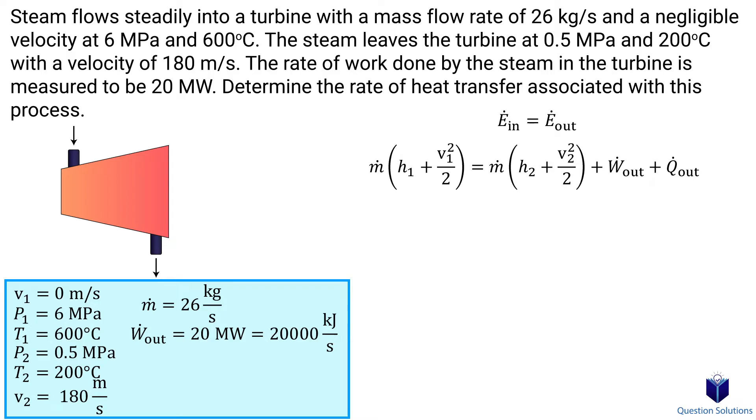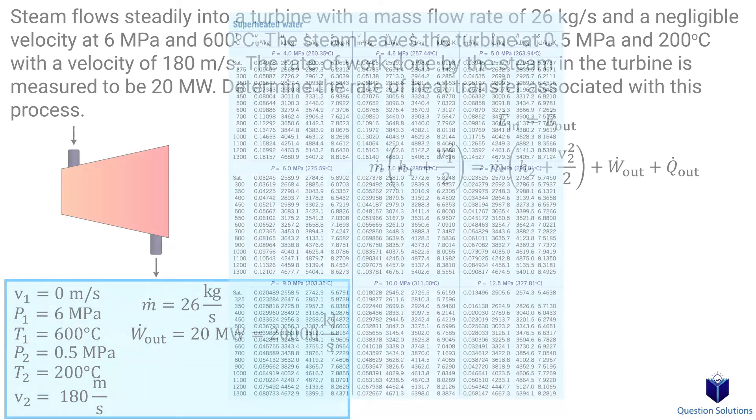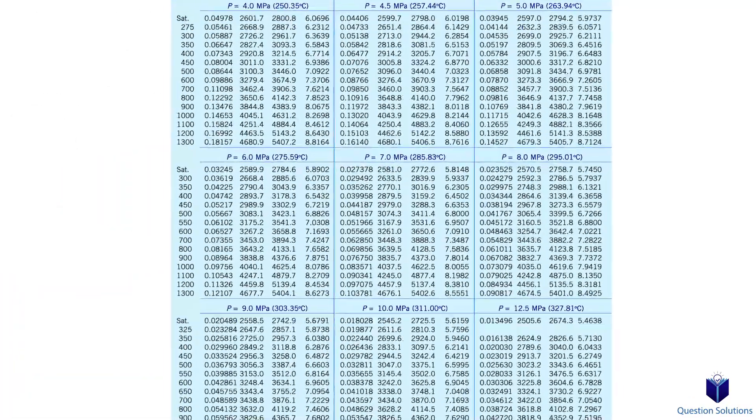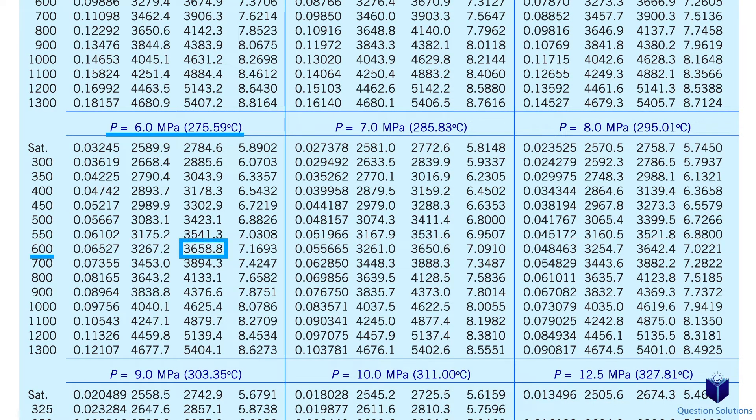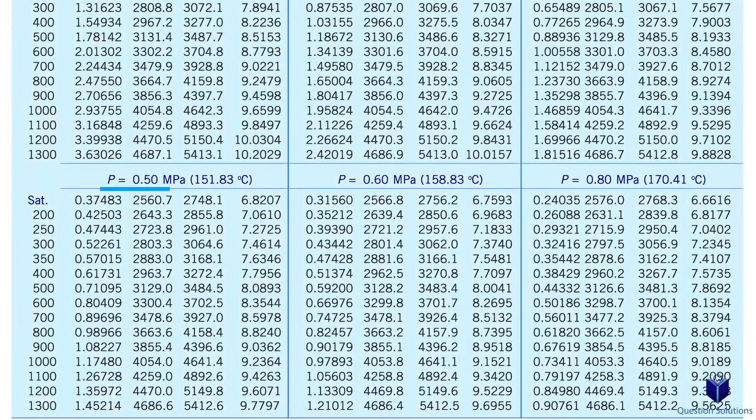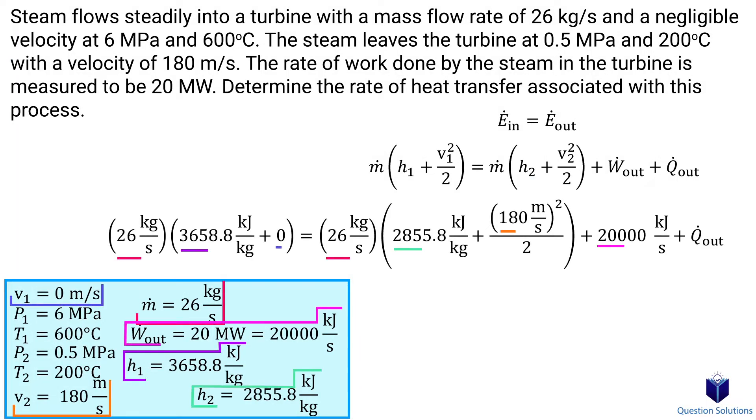So what we need are the enthalpy values. Since this is steam, we can find those values using a table. Our initial pressure is 6 MPa and temperature is 600 degrees celsius. So our value is right here. Our final pressure is 0.5 MPa and the temperature is 200 degrees celsius. So the value we are looking for is right here.